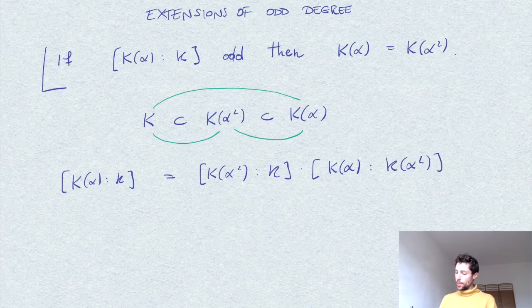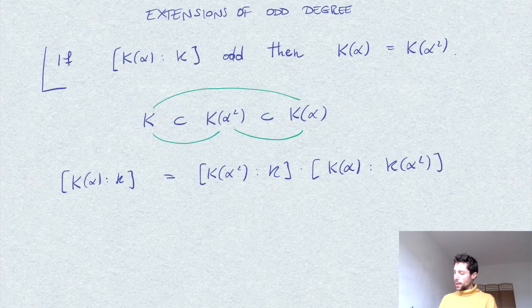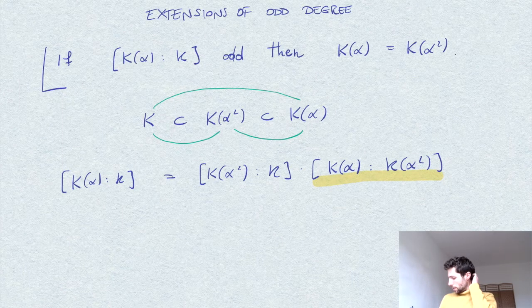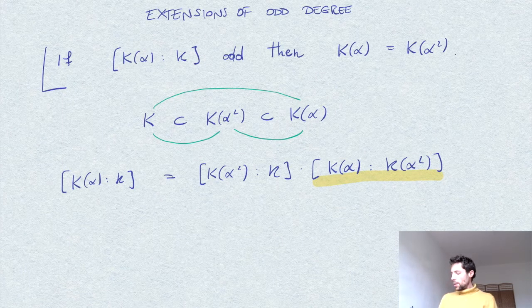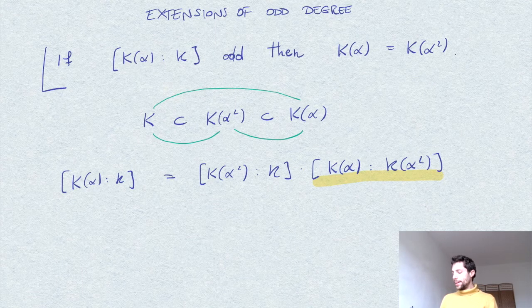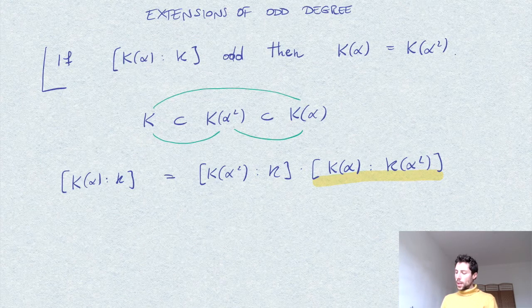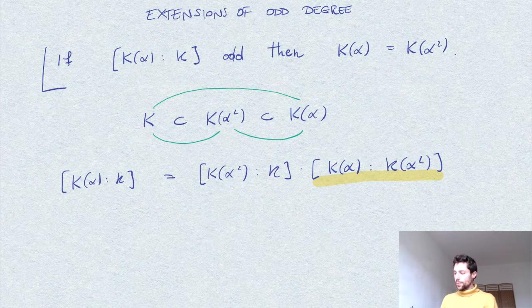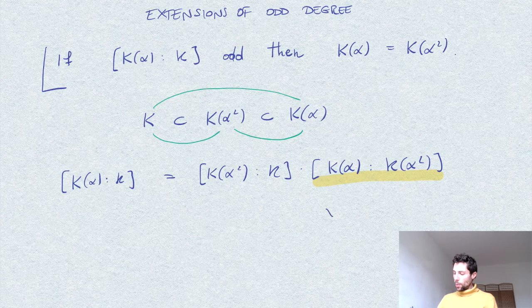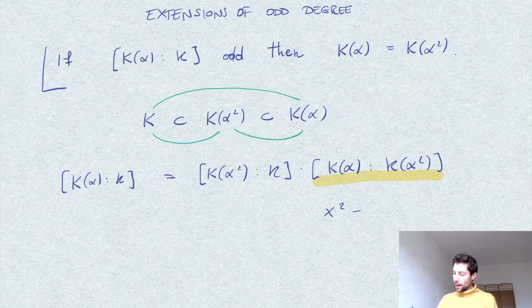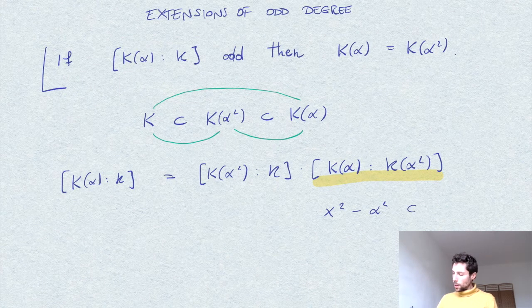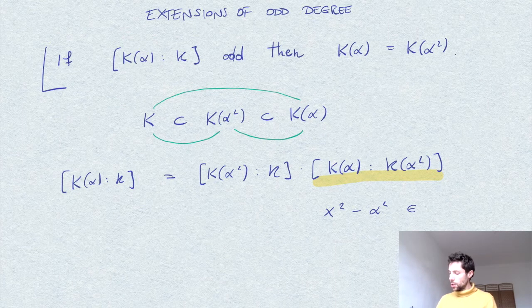What do we have here? Let's take a look at this term, this degree here. So α will have degree over the field K(α²), can have degree either one or two, right? Because α will always satisfy the polynomial x² minus α², which is a polynomial with coefficients in this field.